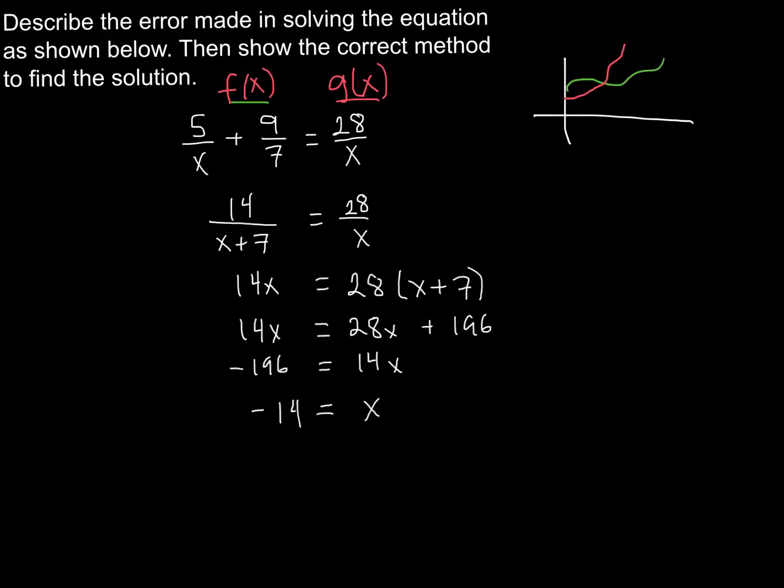All right, so hopefully that went well. The tricky part here is that we have to sort of think about what is the person that's solving this? What are they doing in each step? And so if we look at this first move here, from here to here, well, on the left side, it appears as though they are trying to add these two rational expressions.